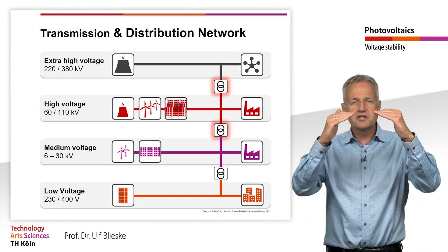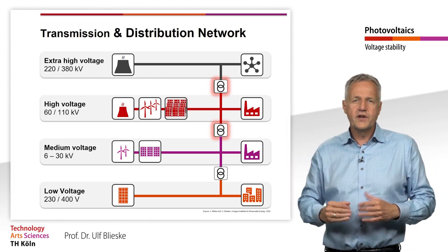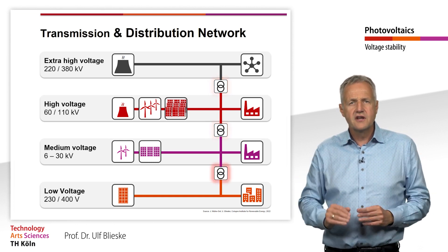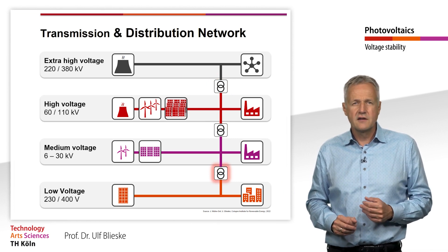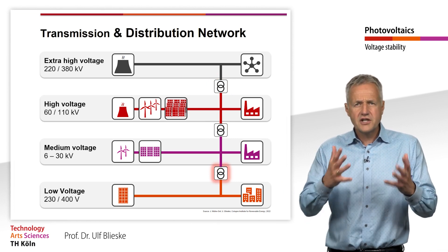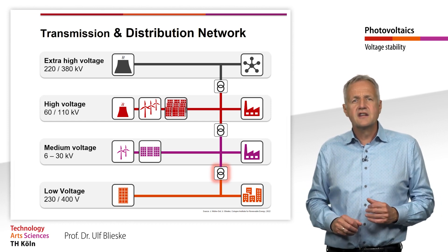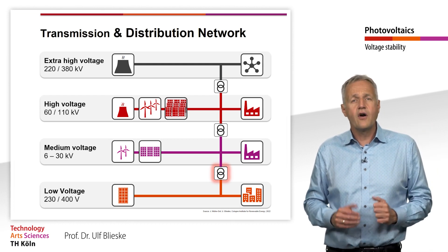Only between medium voltage and low voltage, a fixed transformation ratio is given usually. Due to the fixed transformation ratio, the voltage on the low voltage side changes with the voltage on the medium voltage side of the transformer.